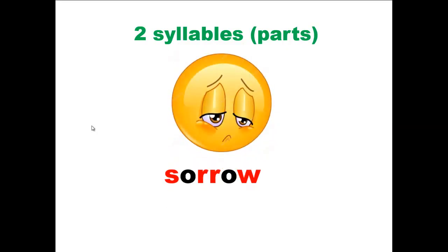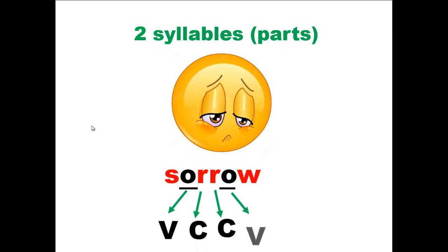Sorrow. Starting with the first vowel sound: vowel, another consonant, another consonant, and a vowel sound. So the word should be divided between the consonants in the middle. The first syllable will be 'sor,' while the second syllable will be 'row,' and the whole word is sorrow.